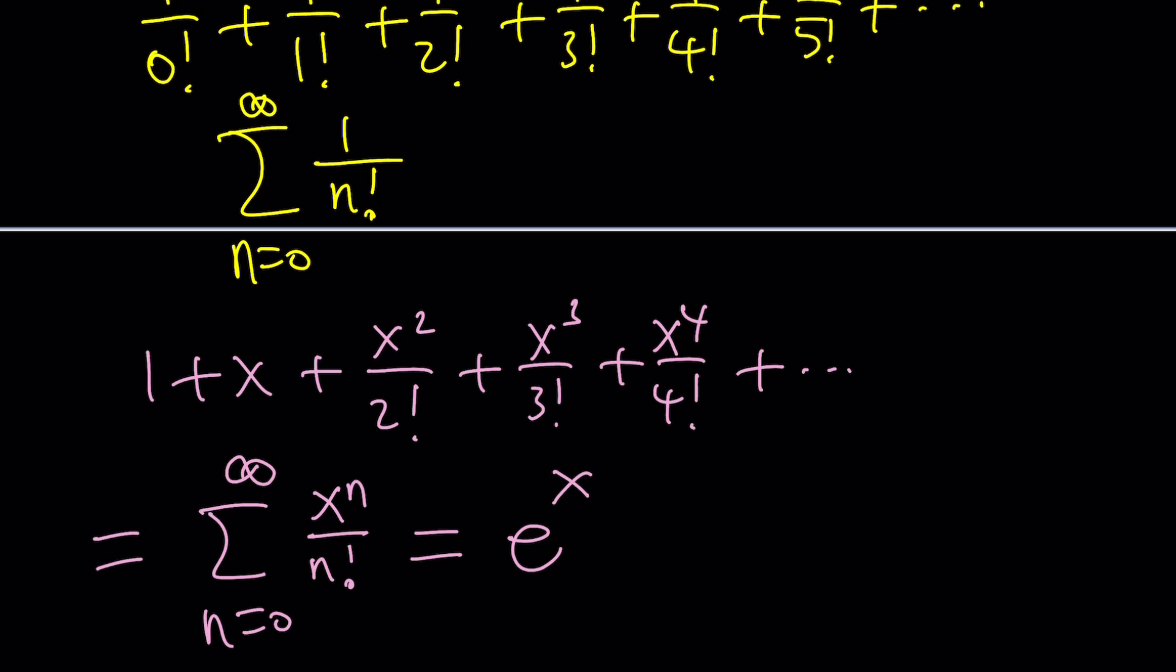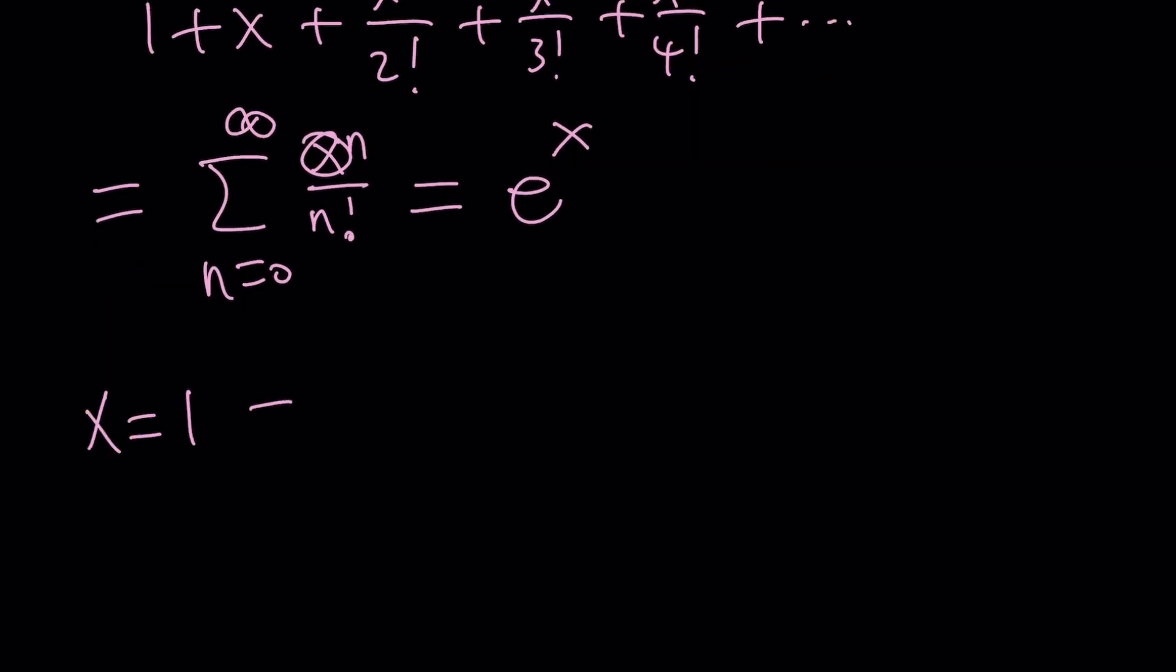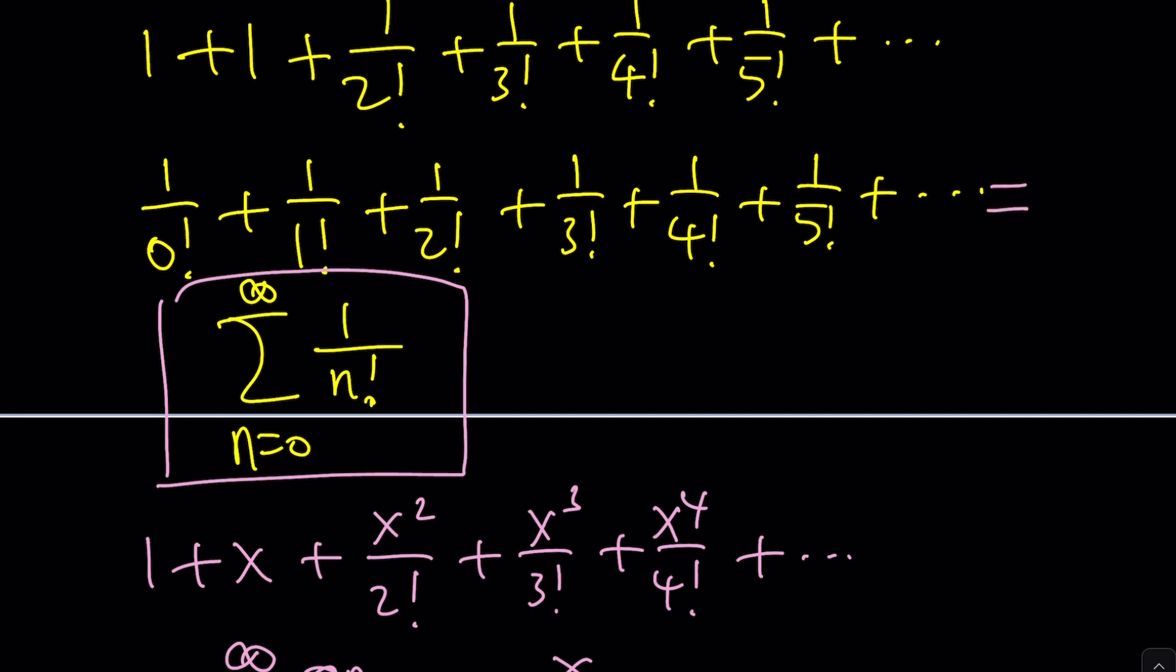And from here we can find the following sum. If you look at this carefully all you have to do is replace the x with 1 because that's going to give you exactly this. So if x is set equal to 1 then we get n equals 0 to infinity 1 to the power n which is 1 over n factorial which is e to the power 1 which is just e. Therefore this sum that you've been looking for is equal to e or Euler's number.